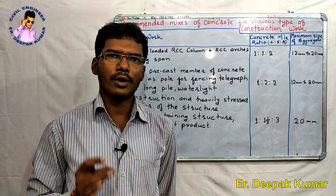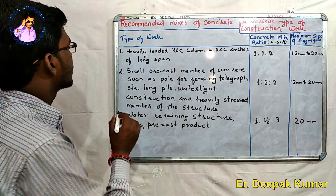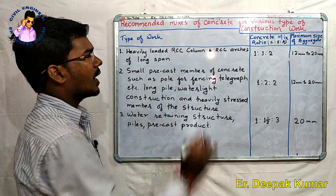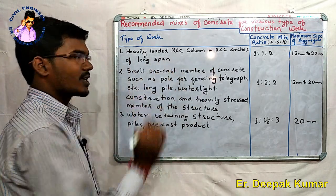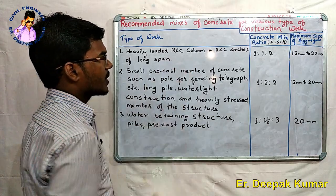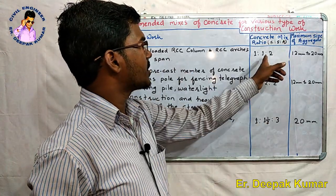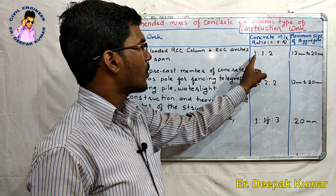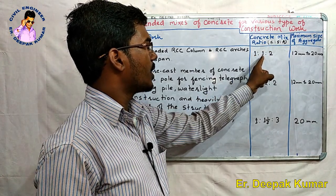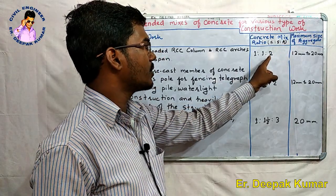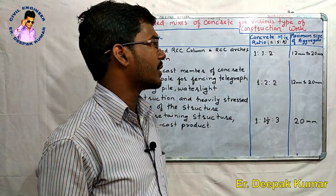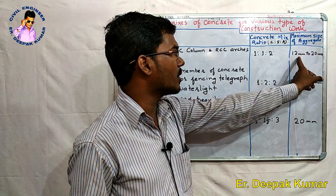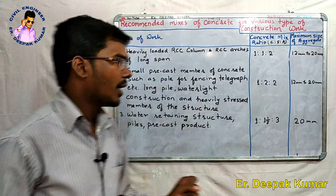The first type is heavily loaded RCC columns and RCC arches of long span. For this, the concrete mix ratio is 1:1:2, meaning one part cement, one part sand, and two parts aggregate. The maximum size of aggregate is 12mm to 20mm.